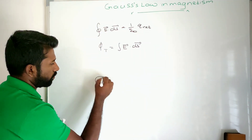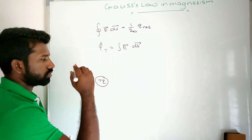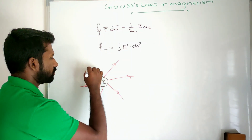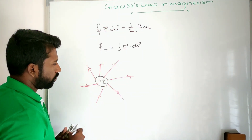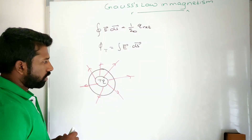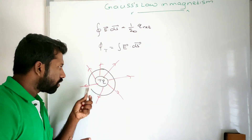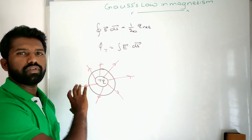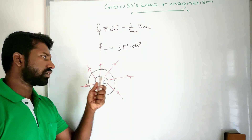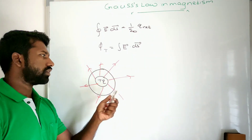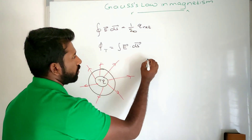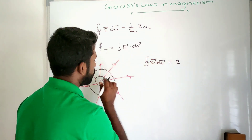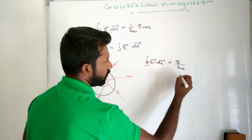I will show a positive point charge. This positive point charge produces an electric field going outward in all directions. Consider a closed loop around it. I am going to find out the total electric flux around this closed loop. Most of the field lines are going away from the positive point charge, so there is a net electric flux for this closed loop. The closed integral E dot dS is equal to the total charge in the closed loop divided by epsilon-0.